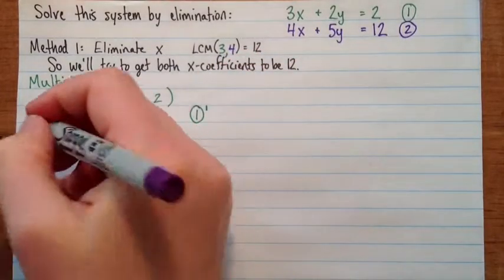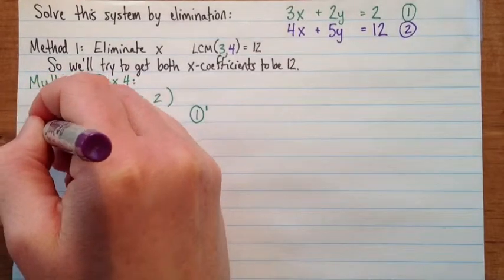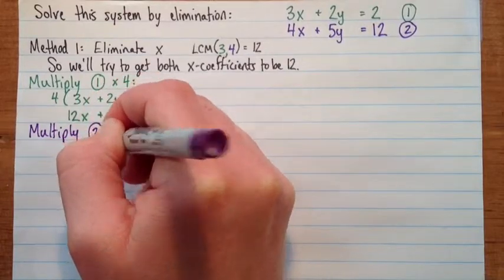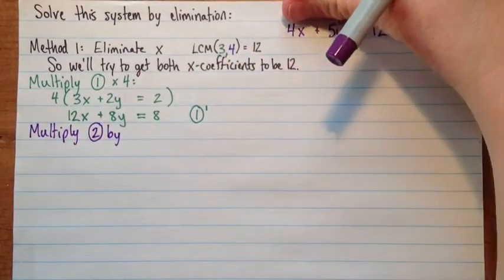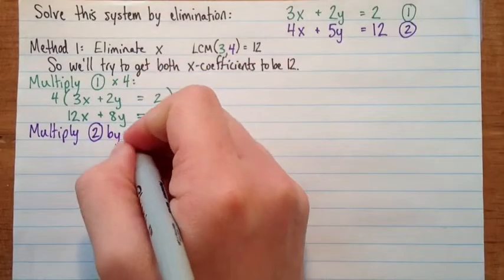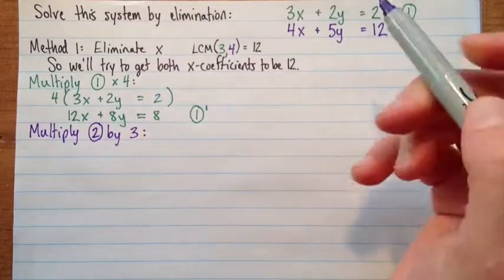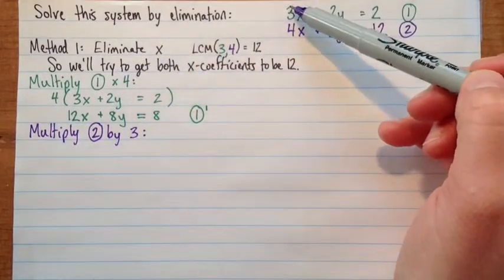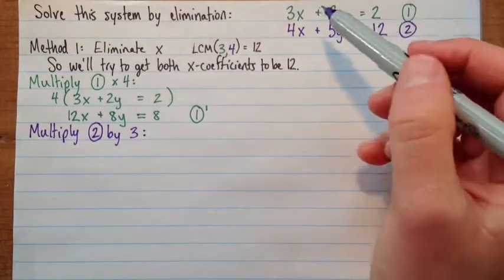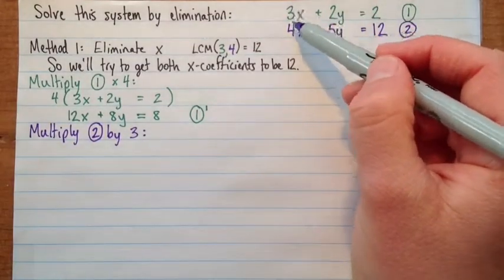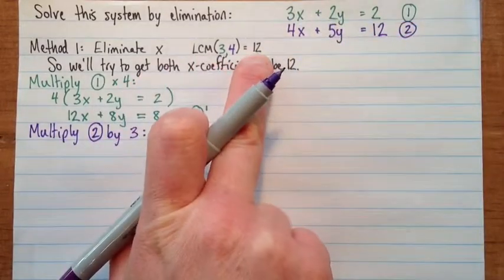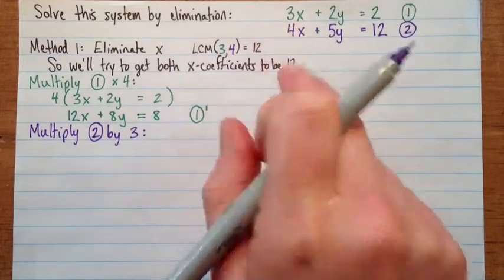Okay, now we're going to do the same thing to equation 2. So we'll multiply equation 2 by... Now what can we multiply it by so that we get 12x? Well, we've got 4x now, so we'll multiply it by 3. Now, it happens to be that here we had 3x and we multiplied by 4, and we had 4x and we multiplied by 3. That will not always be the case. It's only the case if these don't have any common factors other than 1. So you say we're trying to get 12, so what should you multiply it by? That's how you decide it.